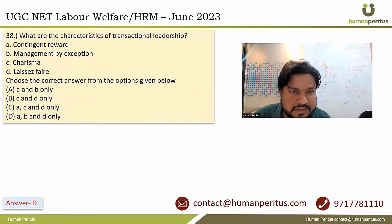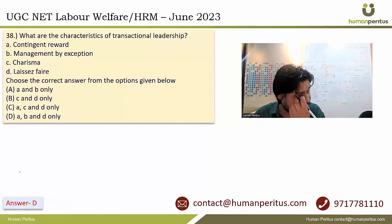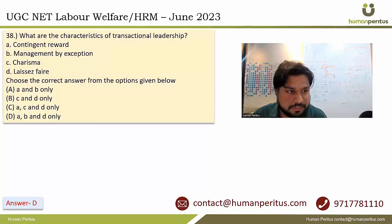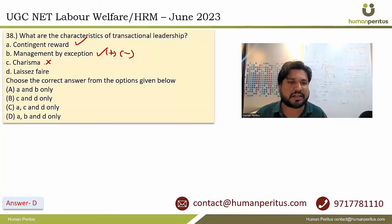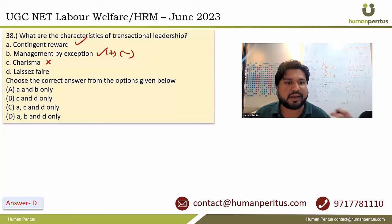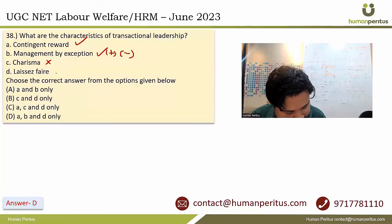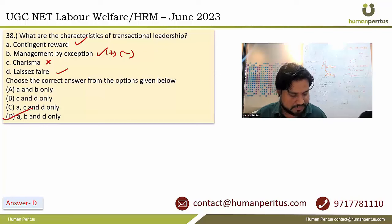What are the characteristics of transactional leadership? Transactional leadership limits itself to outcomes and results. Contingency reward and management by exception — whether positive or negative — are its features. Charisma is generally associated with transformational leadership, not transactional. Also, laissez-faire comes under transactional leadership in an extended sense. So A, B and D is the correct answer.